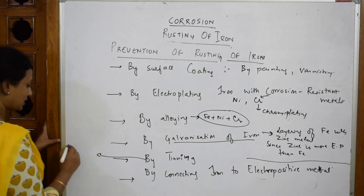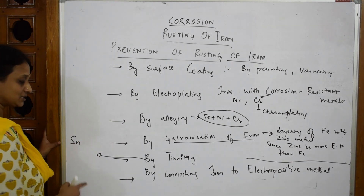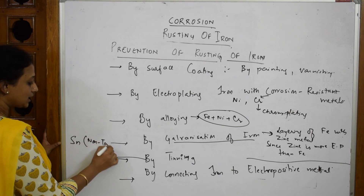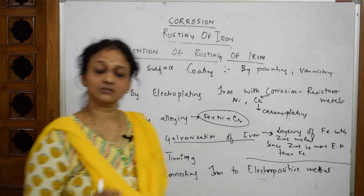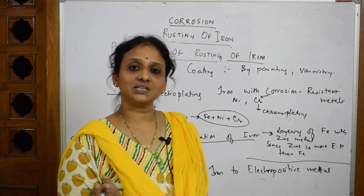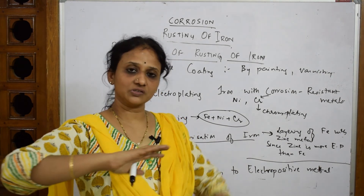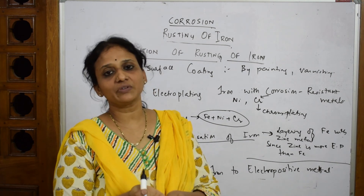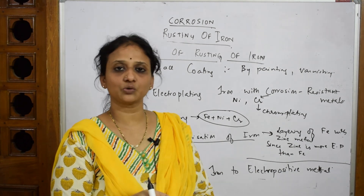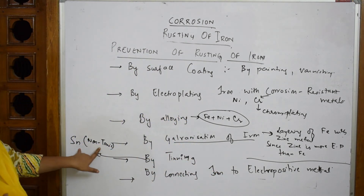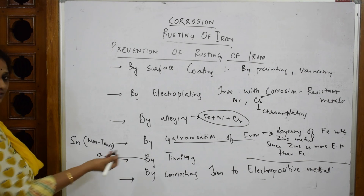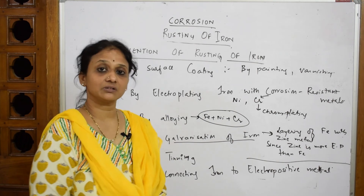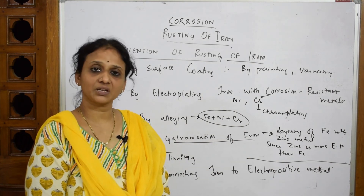The next method is tinning. Tin (symbol Sn) is used because it is non-toxic in nature. A layer of tin is applied on the surface of iron to prevent corrosion. So tinning means forming a protective tin layer on the metal surface.